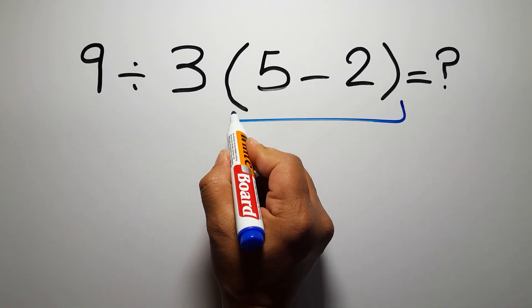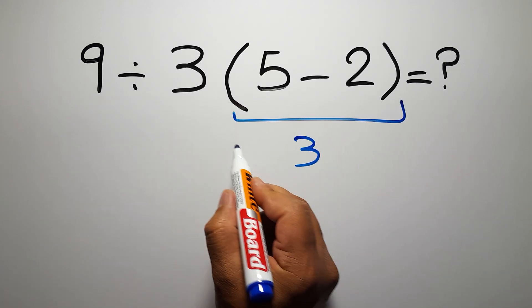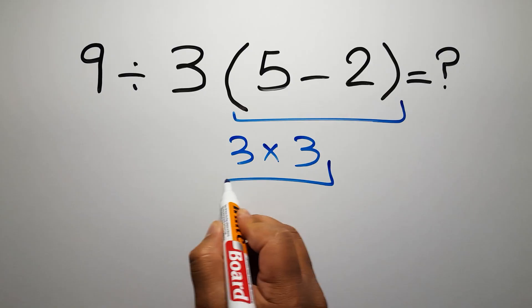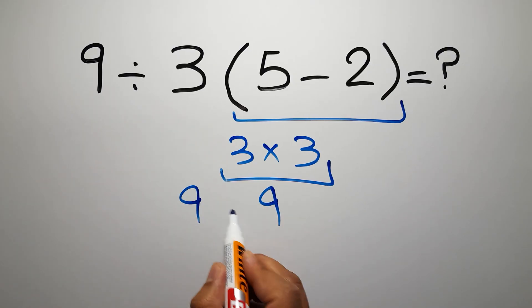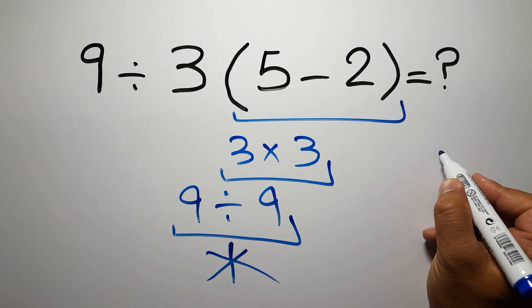5 minus 2 equals 3, and 3 times 3 gives us 9. So 9 divided by 9 is just 1, but this answer is not correct. According to the order of operations, first we have...